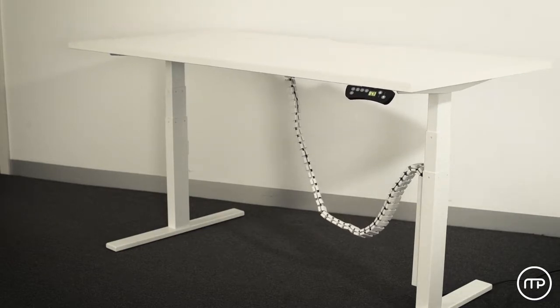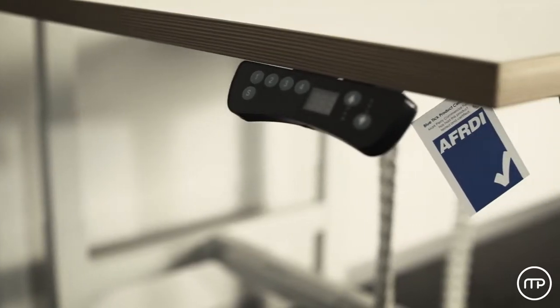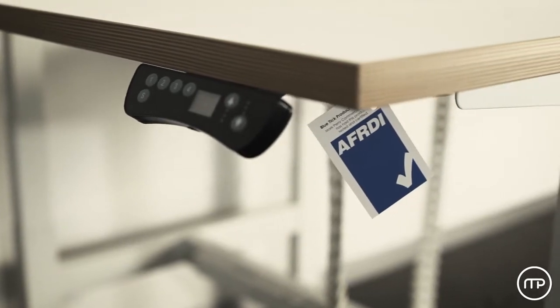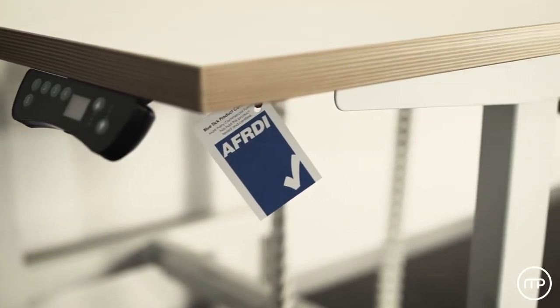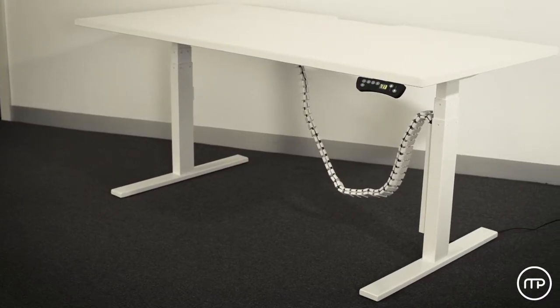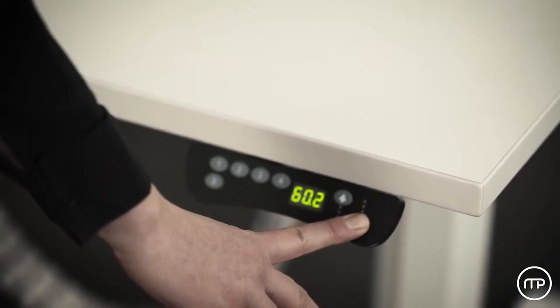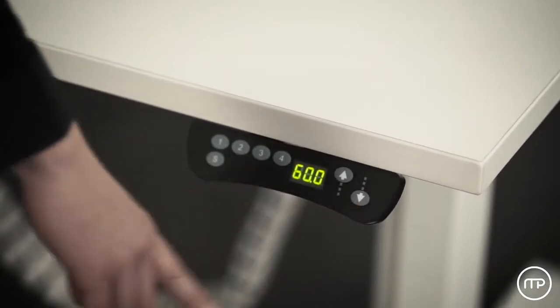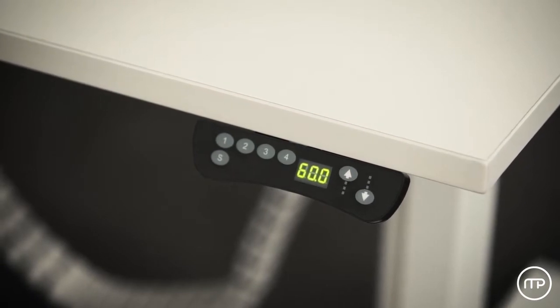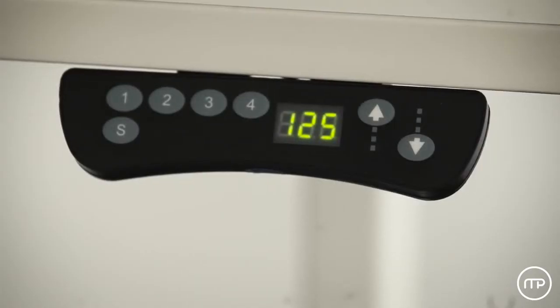The Ascend Sit-Stand Workstation is built to the highest standards and carries the Afridi Ferntek blue tick of approval. It has also been certified by the Good Environmental Choice Australia. The handset features an LCD display which shows the height of the worktop in centimeters. The Ascend Workstation can be adjusted from 60 centimeters high to 125 centimeters high.